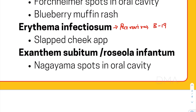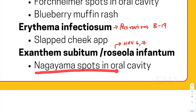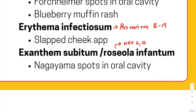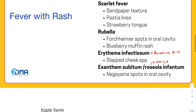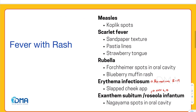Then there is exanthem subitum, or roseola infantum, which is caused by HHV6 and HHV7. They show characteristic Nagayama spots in the oral cavity. That's it for today — thank you for watching.